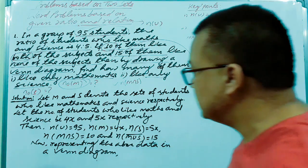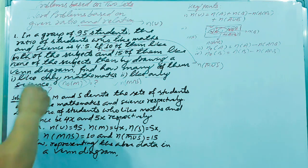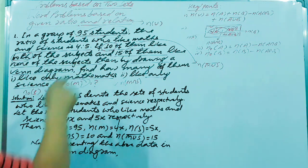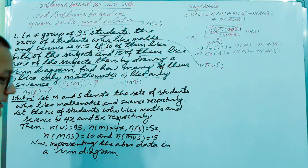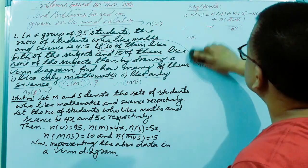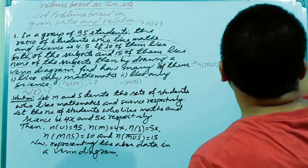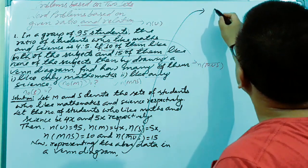The Venn diagram plays a very important role and will give you the solution for this question. Especially if you are asked to find the answer by using a Venn diagram, it's better to solve using the Venn diagram. Otherwise, if nothing is specified, you can use either the Venn diagram or the formula.